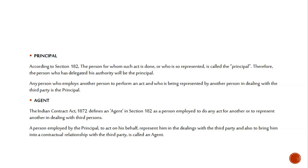Any person who employs another person to perform an act, or who is being represented by another person in dealing with a third party, is the principal. Agent की बात करें तो Indian Contract Act 1872 के Section 182 के अंदर: कोई भी ऐसा व्यक्ति जिसको employ किया जाता है दूसरे के acts perform करने के लिए या third party के आगे उसको represent करने के लिए, ऐसे व्यक्ति को agent बोलते हैं।